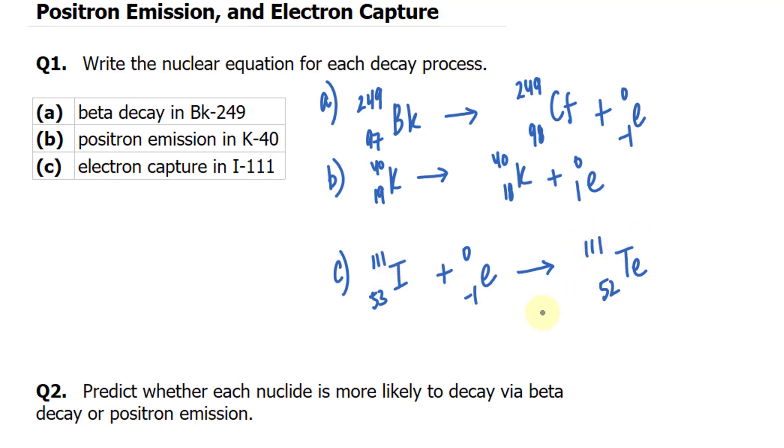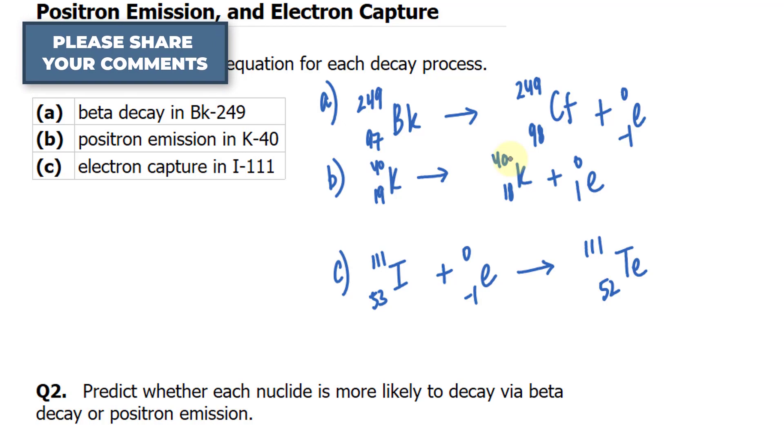Notice that in all three of these equations, the numbers are all equivalent. For example, we have 249 on the left side and 249 on the right side, and the atomic numbers also match. 97 is equivalent to 98 minus 1. You want to make sure that that's the case, and if that's not the case, then you've probably done something wrong.